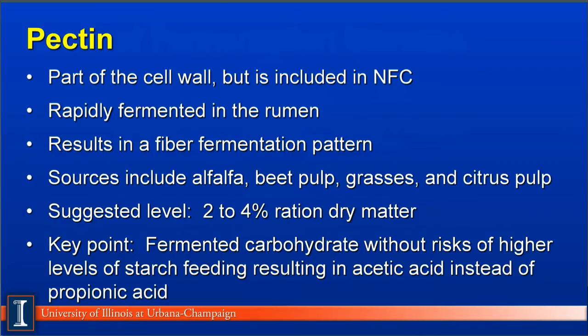Finally, let's talk about pectin, or soluble fiber in the rumen. This is considered part of the cell wall, but it is included in the non-fiber carbohydrate fraction because it is rapidly fermented in the rumen. The neat thing is that it results in a fiber fermentation pattern, meaning acetic acid, not propionic acid. Sources of pectin, or soluble fiber, would include alfalfa, beet pulp, grasses, and citrus pulp. Suggested levels in the ration could vary from 2% to 4% or slightly higher. The key point is rapidly fermented carbohydrates without the risks of high starch feeding and acidosis, resulting in more acetic acid instead of propionic acid.